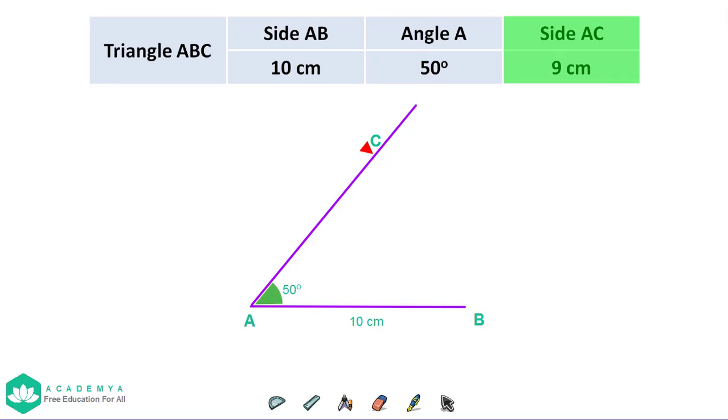Now you can erase the extra line. Connect the points B and C and get triangle ABC.